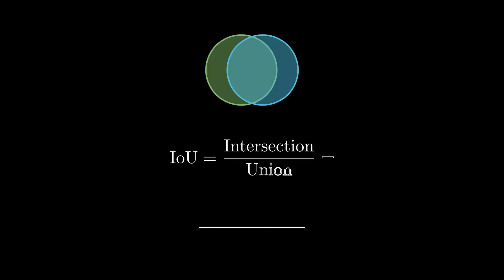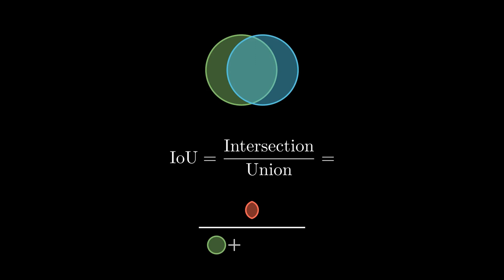How to compute it? Well, the formula is hidden in the name of this metric. We take an area of overlap, also known as the intersection, and a sum of the objects' areas minus the area of overlap, also known as the union.